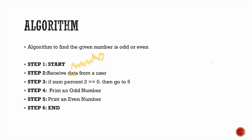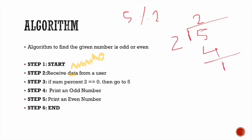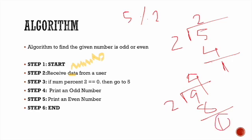Now let's choose another number. Let's choose 5. 5 mod 2: two times two is four, so reminder is 1. For 6 mod 3, the reminder will be zero. So we will put reminder 1 for odd numbers and reminder 0 for even numbers.